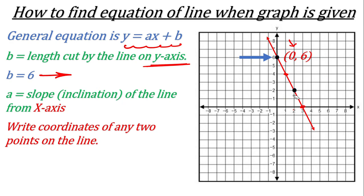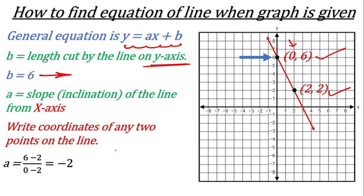I have taken this second point. If you see, the value of x for this second point is 2, and the value of y is also 2, so the coordinate of this point is (2, 2). After getting these two coordinates — (0, 6) and (2, 2) — we can find the value of a. The value of a is found by putting the difference of y values in the numerator and the difference of x values in the denominator.